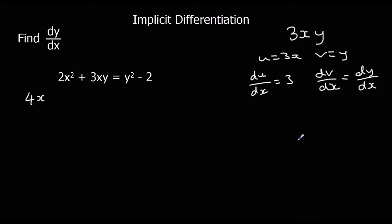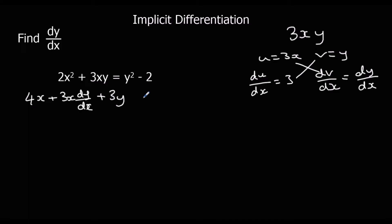y differentiated is dy/dx — y differentiated with respect to y is 1, multiplied by dy/dx, which is dy/dx. So then we've got u dv/dx, which is 3x dy/dx, plus v du/dx, which is 3y. That equals y squared differentiated with respect to x: differentiate normally to get 2y, then put dy/dx after it.